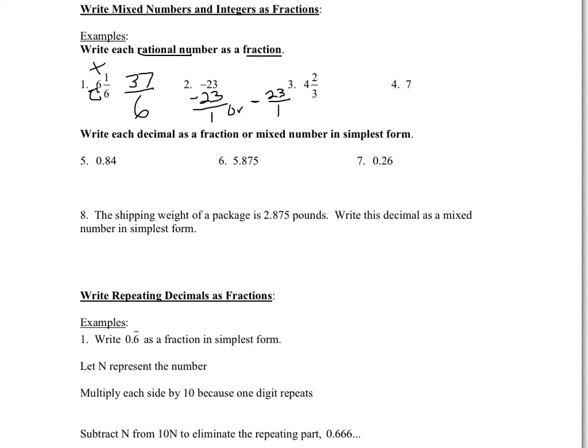1 and 2 thirds: 3 times 4 would be 12, plus 2 would be 14, and then you always keep that same denominator — so 14 thirds. And then 7 is a whole number. You always take a whole number and put it over 1. That would be 7 over 1 in fraction form.